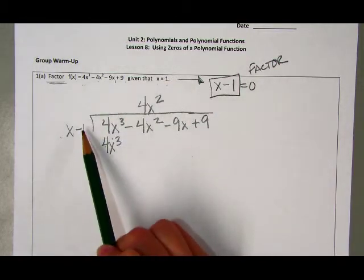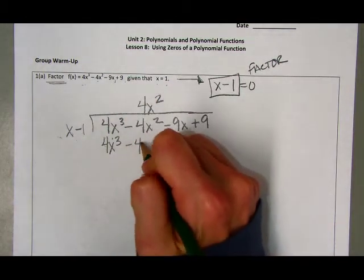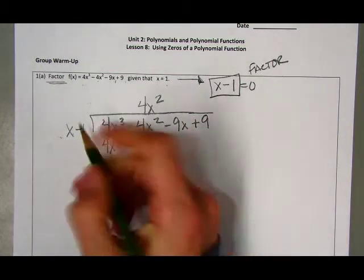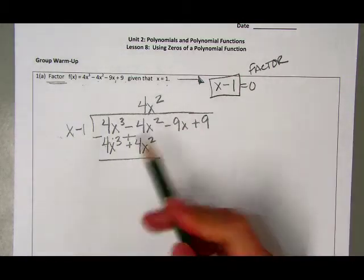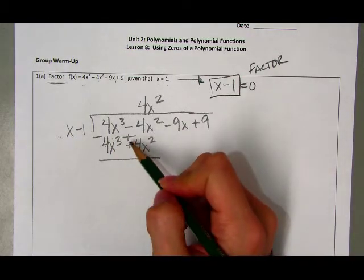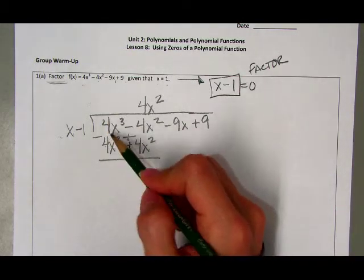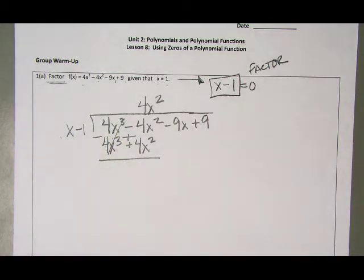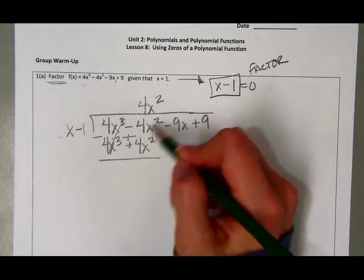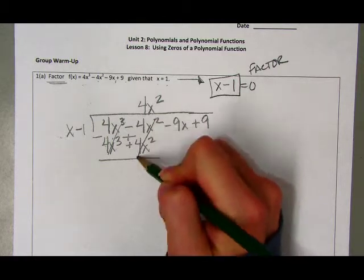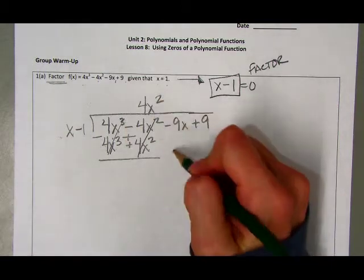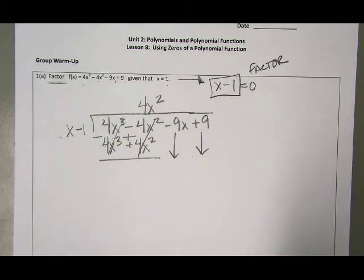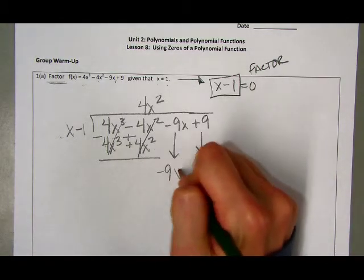4x squared times my second outside term gives me negative 4x squared. Subtracting all terms, my double negatives turn positive. 4x cubed minus 4x cubed cancels to 0. Negative 4x squared plus 4x squared also cancels to 0. Since I have two terms on the outside, I bring down both remaining inside terms: negative 9x plus 9.